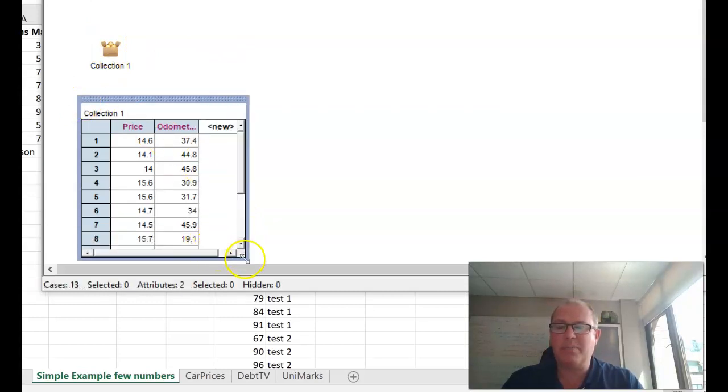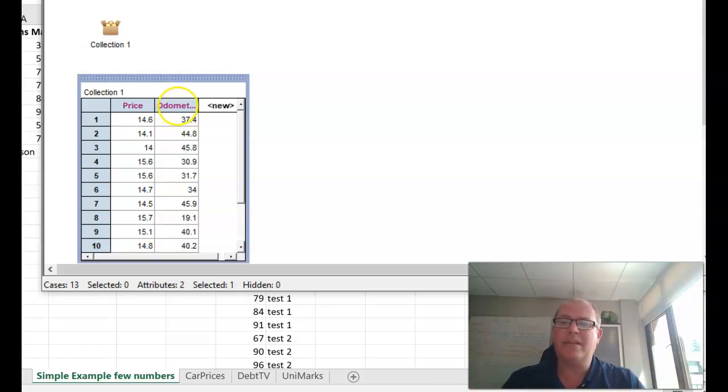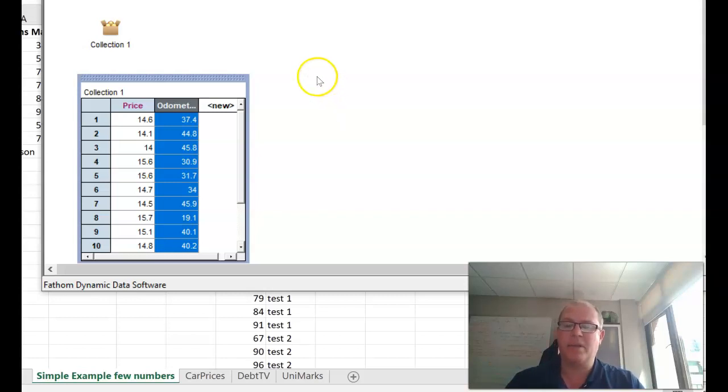You'll see nicely that you've got all your data of the used price. It's in US dollars in thousands of dollars so 14.6 means $14,600 US. This is all real data. The odometer reading, again this is US data, is in miles so 37.4 means that car costs $14,600 and it's done 37,400 miles.